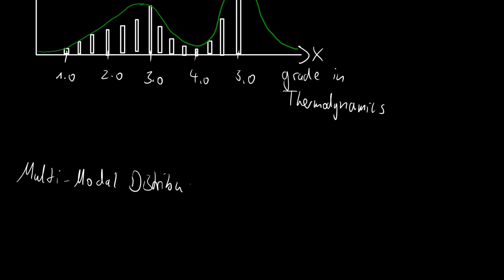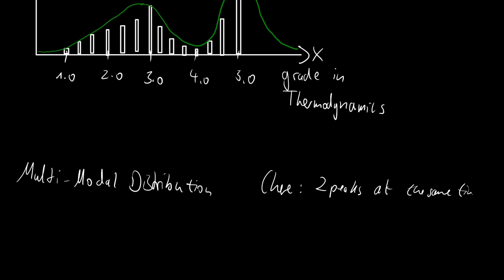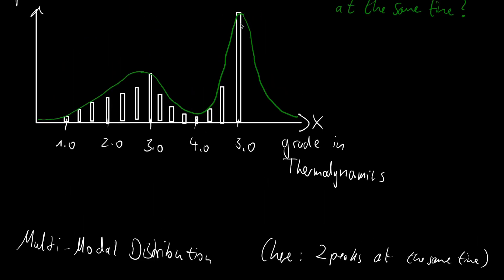We can't model this with a regular Gaussian anymore, because a regular Gaussian only has one peak, only one mode. But here we have two peaks at the same time in one distribution. This is extremely handy, because based on the peaks we can derive or see a clustering of our data.